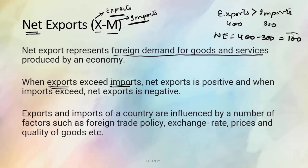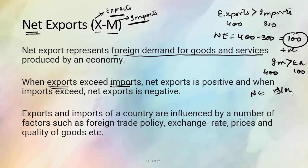Lekin wahaan pe agar mere imports zyaada hai exports se — for example, mere imports 400 crores hai and exports is only 100 crores — toh in this case net exports negative ho ga. Agar hum minus karenge exports minus imports toh minus 300 aa raha hai, toh net exports negative aa raha hai. Exports and imports of a country are influenced by numerous factors — jaise ki foreign trade policy kya hai, exchange rate kya chal raha hai, prices kya hai goods and services ki, goods and services ki quality kaisi hai — yeh saare factors hai jo exports aur imports ko influence karte hai.